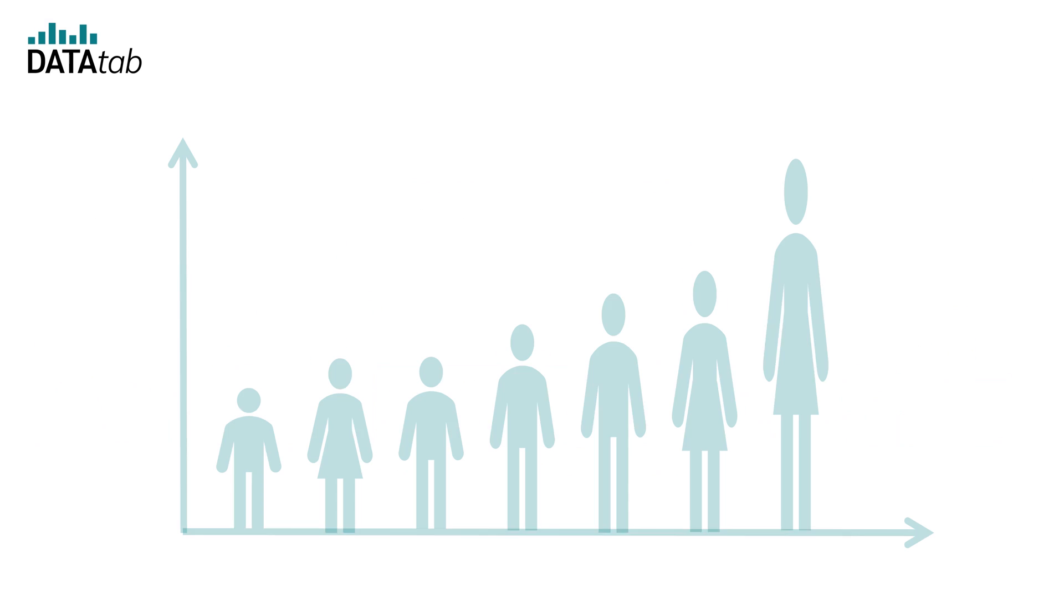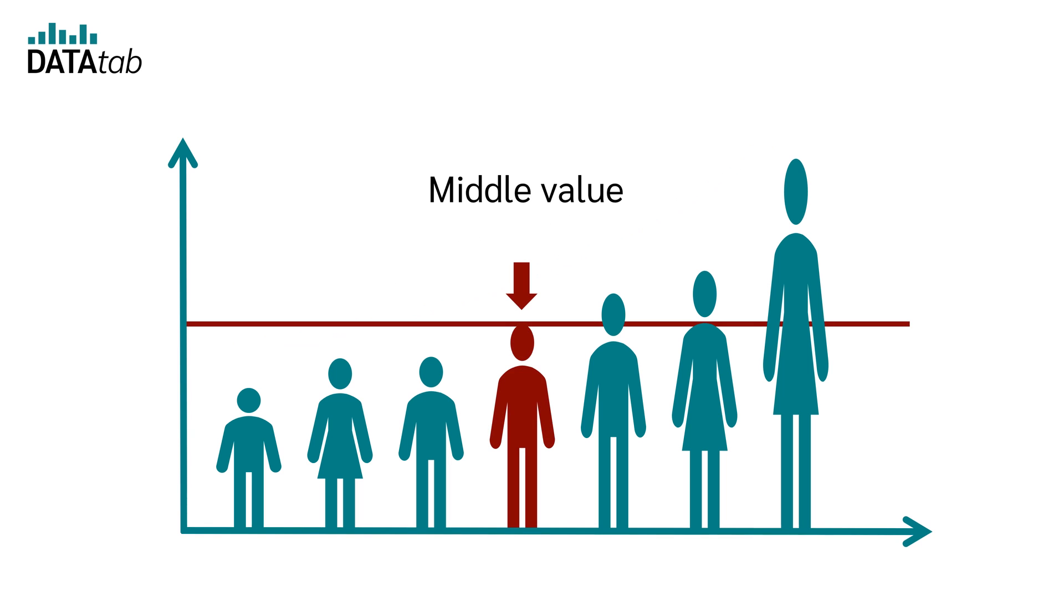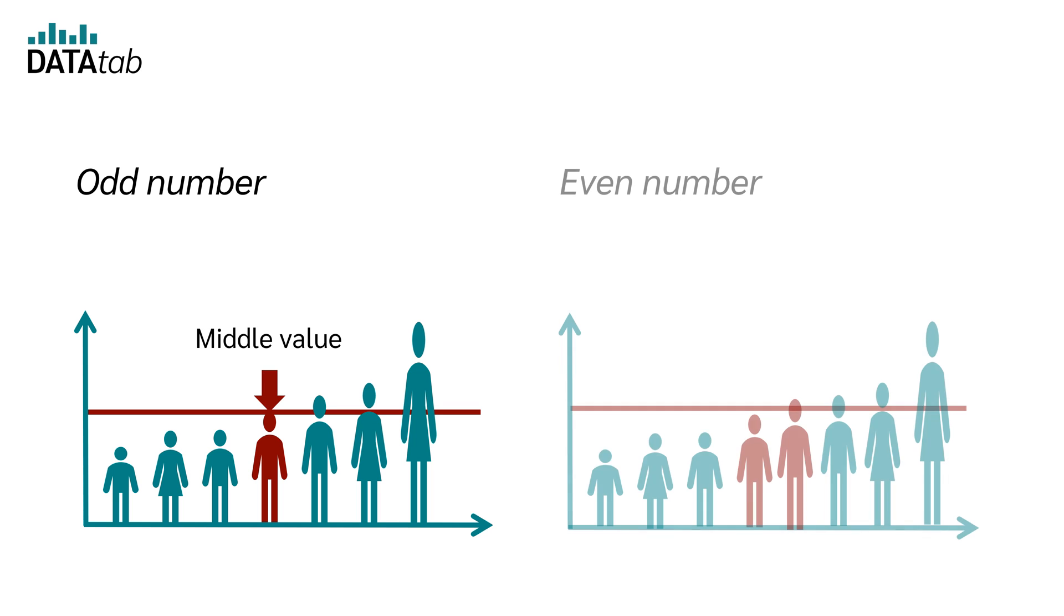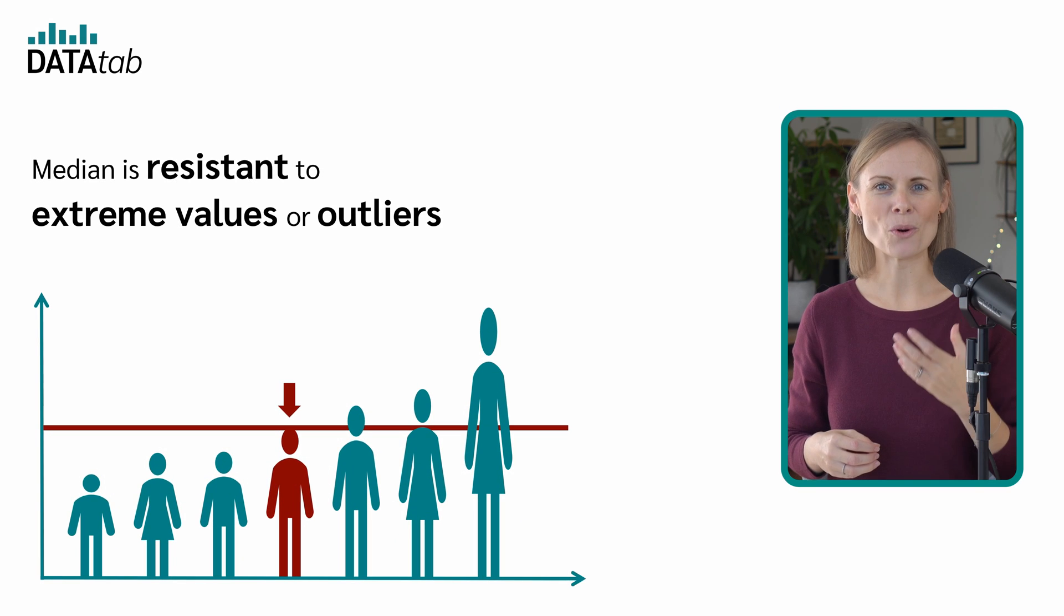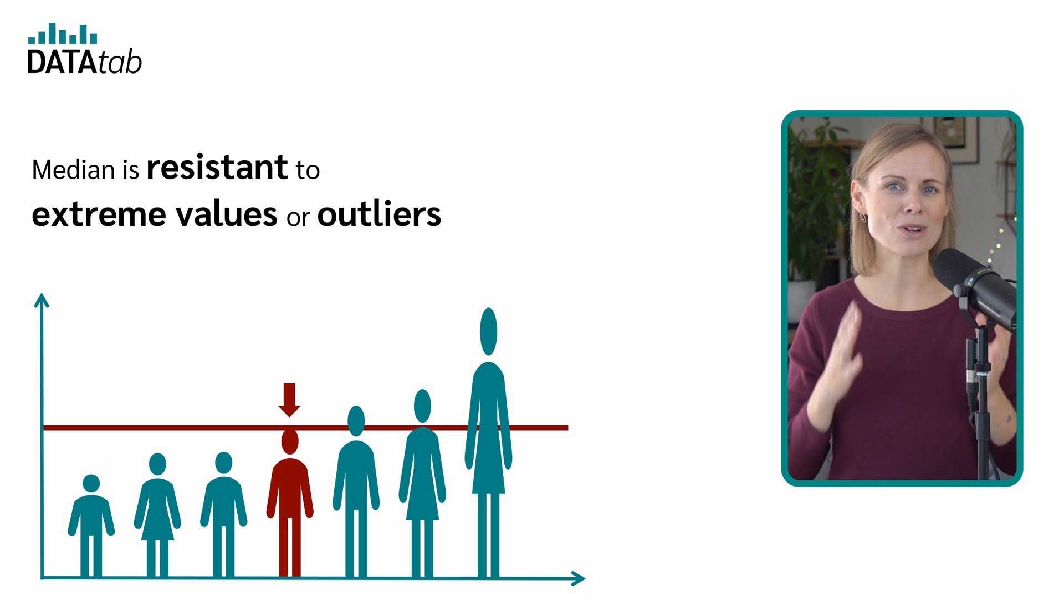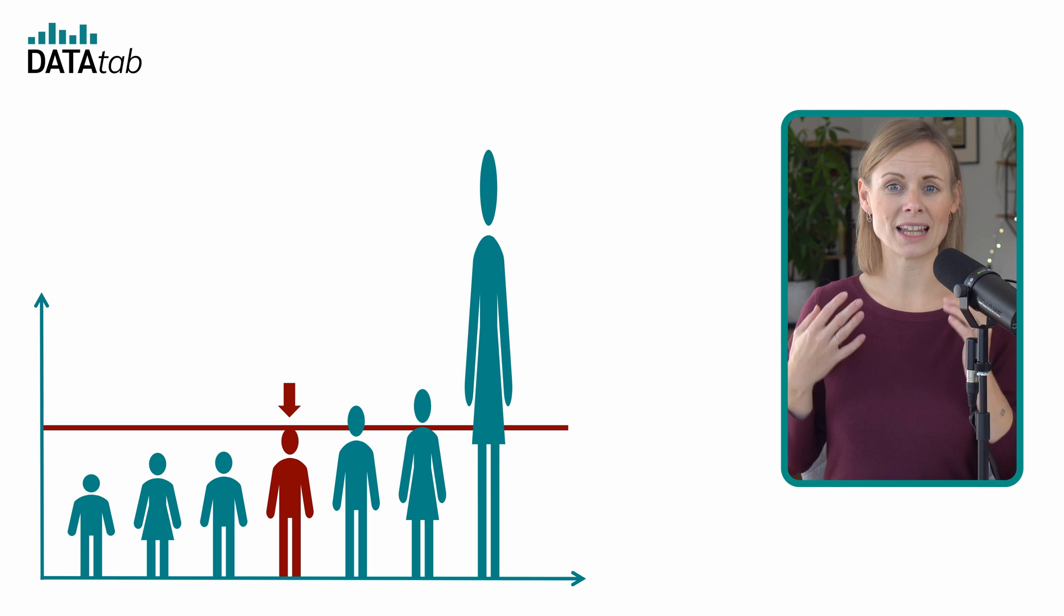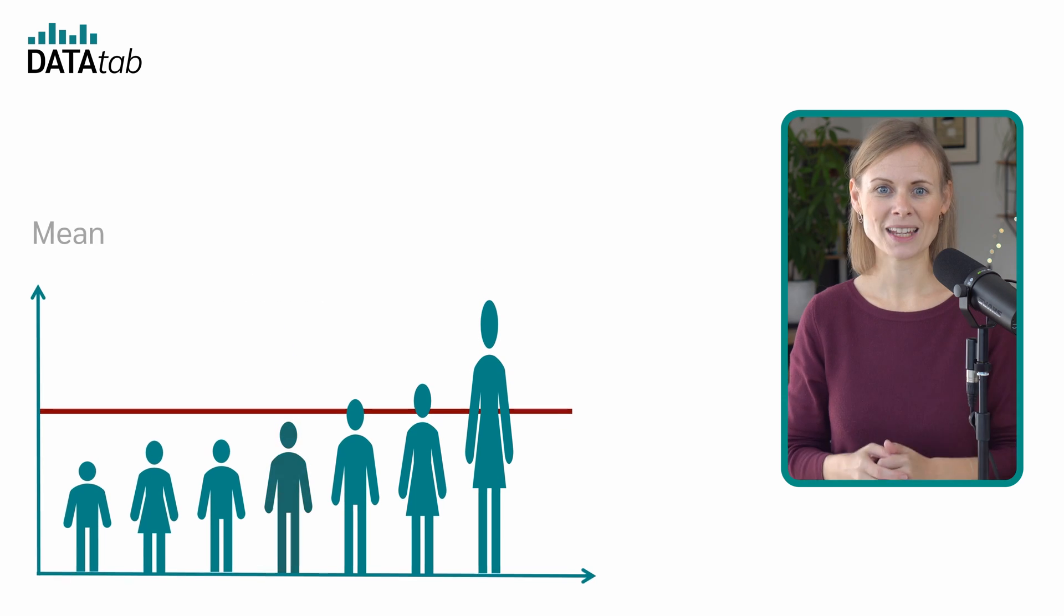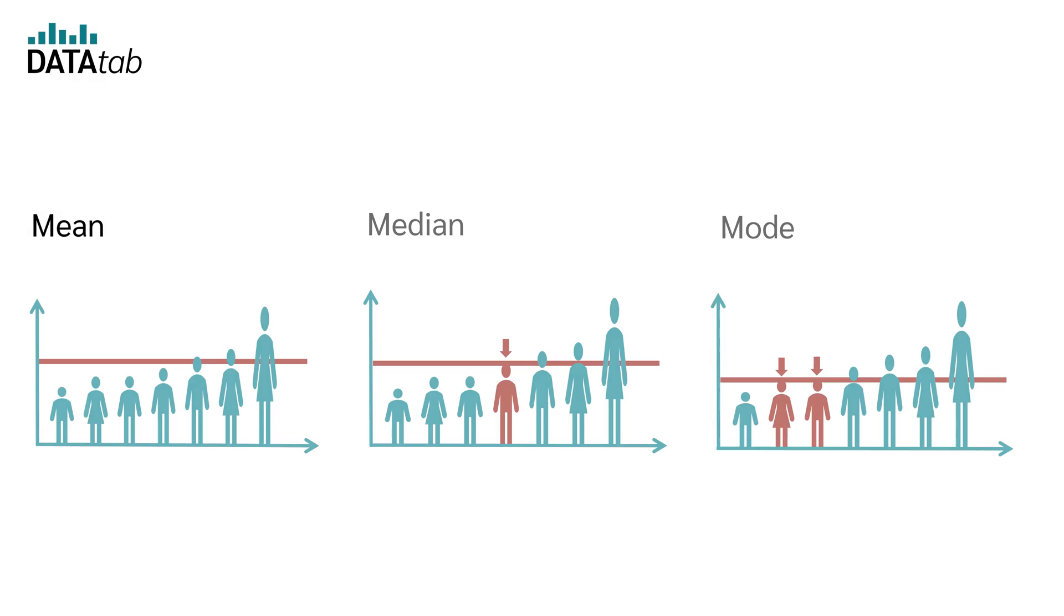What about the median? When the values in a data set are arranged in ascending order, the median is the middle value. If there is an odd number of data points, the median is simply the middle value. If there is an even number of data points, the median is the average of the two middle values. It is important to note that the median is resistant to extreme values or outliers. Let's look at this example. No matter how tall the last person is, the person in the middle remains the person in the middle, so the median does not change. But if we look at the mean, it does have an effect on how tall the last person is.